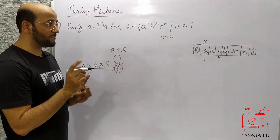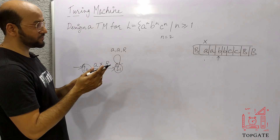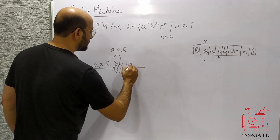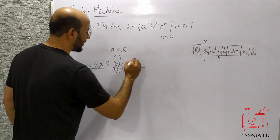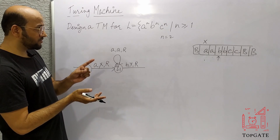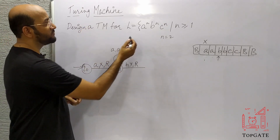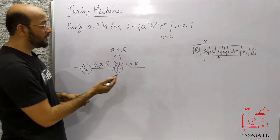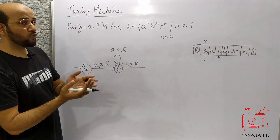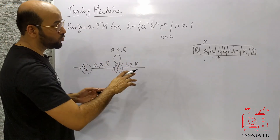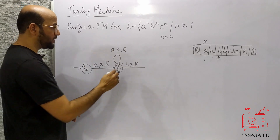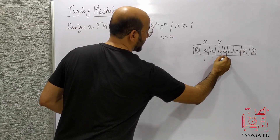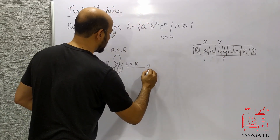This B should be changed to Y because we found a pair for X. So I move forward, find the B, change it to Y, and move to the right direction. Unlike the A^N B^N case where we went back left after finding B, here our work is not done — we still need to find the C. So change B to Y and move right; the pointer now points to the next B and we reach state Q2.